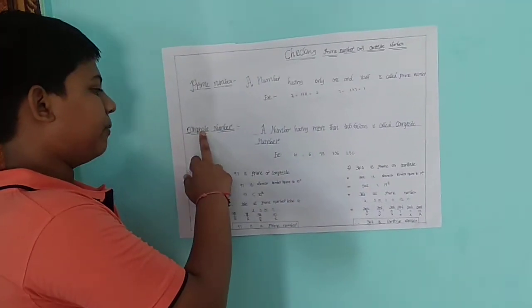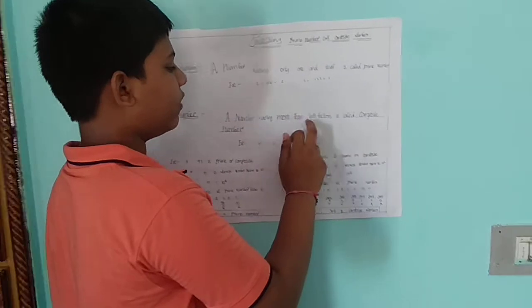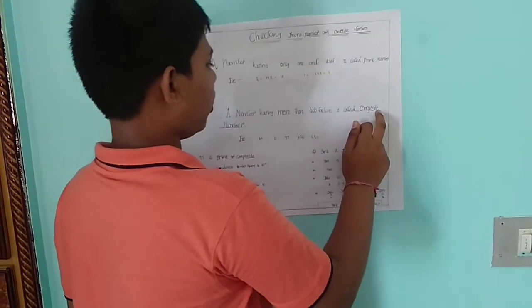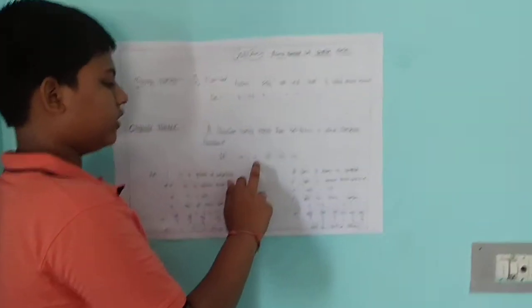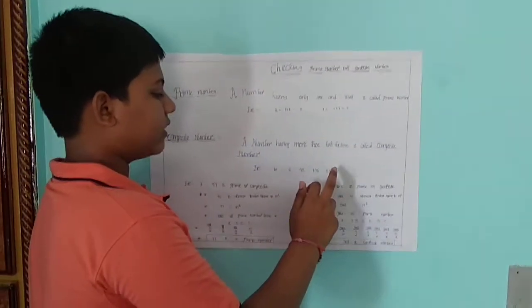Let's learn about composite numbers. A number that has more than two factors is called a composite number. For example, 4, 6, 98, 106, etc.